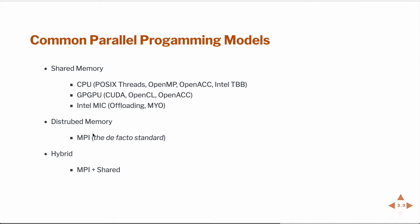For distributed memory, there is really only one way: MPI, Message Passing Interface. This is the de facto standard for distributed memory computing. One nice thing about it is that once you learn MPI, you can also use it to do computations on shared memory machines — you may not get quite the same performance boost, but it does work on both distributed and shared memory machines. Most of us, even in our laptops, have multiple cores we could exploit.